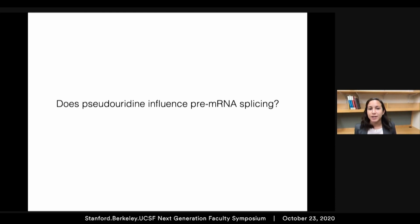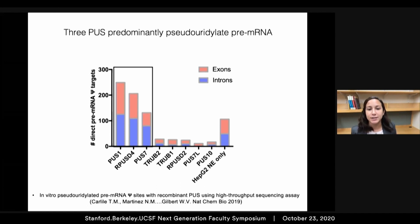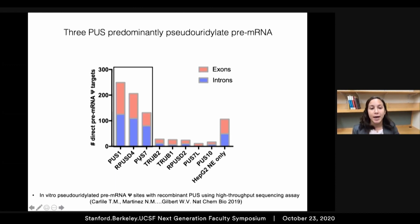Having found this distribution, I wanted to ask: do pseudouridines influence pre-mRNA splicing? But in order to do this, I needed to know which of the 13 pseudouridine synthases modify pre-messenger RNA sequences. To ask this, I used a high-throughput in vitro pseudouridination assay to identify the direct pre-mRNA targets of eight different pseudouridine synthases. I found that three pseudouridine synthases — PUS1, PUSD4, and PUS7 — pseudouridinated the most pre-mRNA sequences, so I prioritized these to perform further experiments to ask what happens to splicing when you've lost pseudouridination by these enzymes.